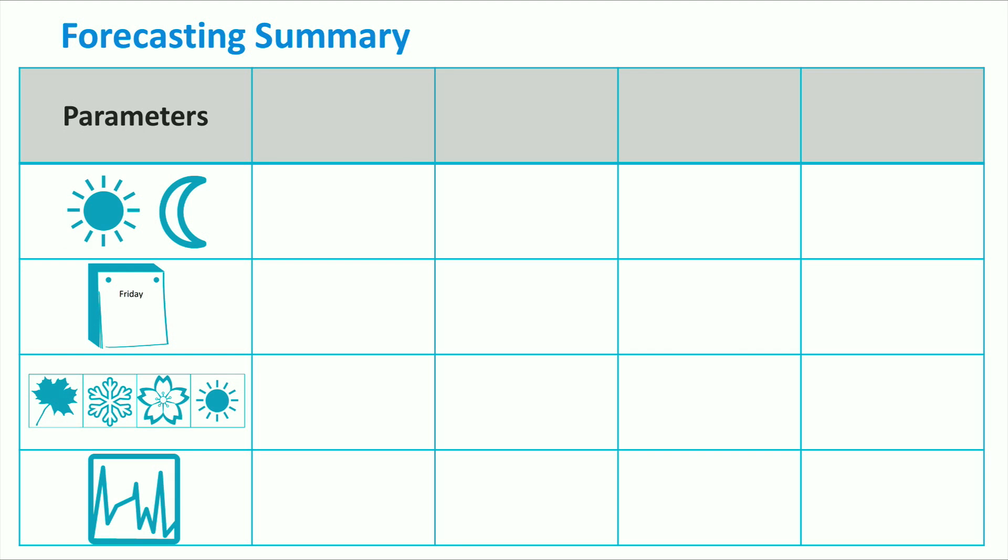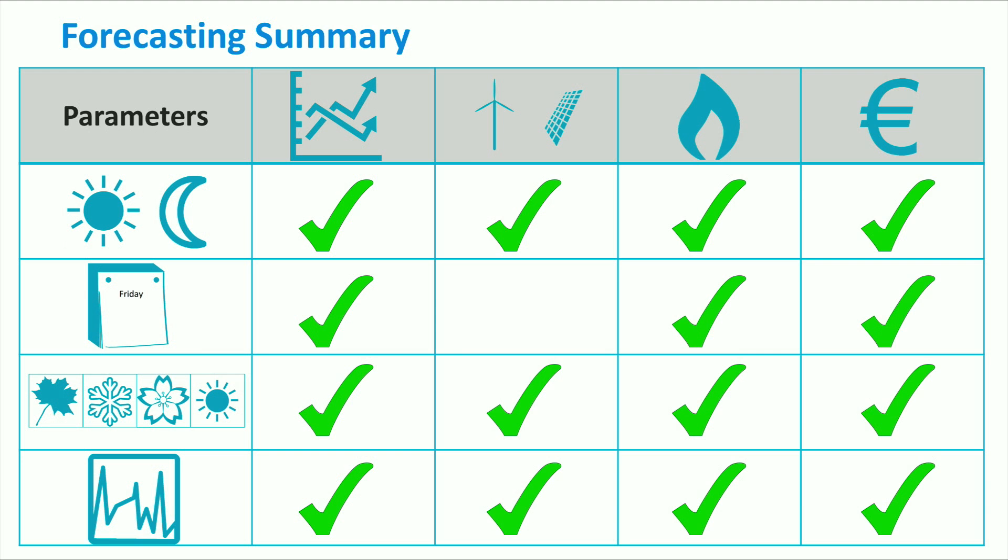Various parameters such as time of day, weekly and seasonal variations, and volatility affect the forecasting of electricity demand, PV and wind production, heat demand, and electricity prices.